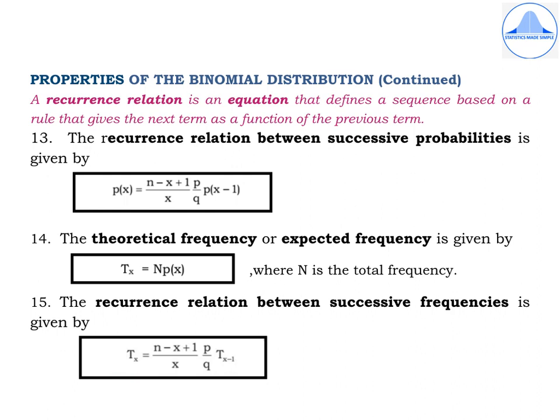All fifteen properties of the binomial distribution are very important and can be asked as one-markers, two-markers, and used in five-mark and ten-mark problems. The examples given are only for your understanding. Please practice all fifteen properties so that you will be prepared to work out problems on the binomial distribution, which I will start in my next video. Thank you.